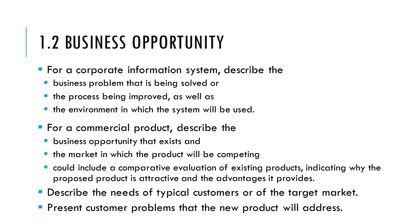Section 1.2 is Business Opportunity. There are two types of projects. If you have a corporate information system, you describe the business problem being solved, the process being improved, and the environment in which the system will be used — which business process will be improved by your software.